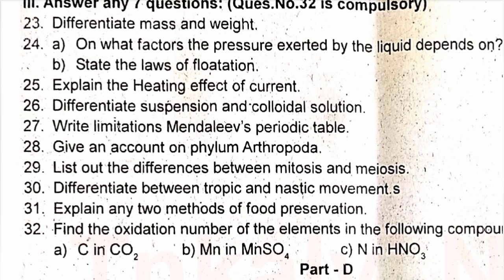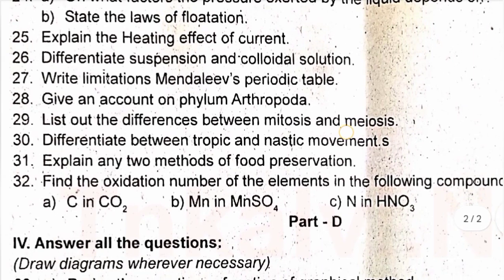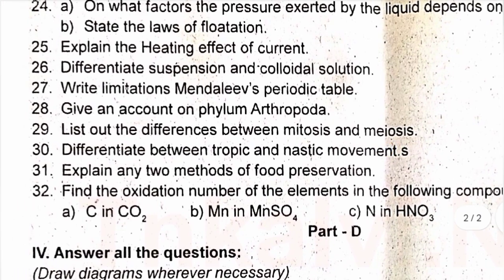Question 28: Give an account on phylum Arthropoda. Question 29: List out the differences between mitosis and meiosis. Question 30: Differentiate between tropic and nastic movements. Question 31: Explain any two methods of food preservation. Question 32: Find the oxidation number of the elements in the following compounds — A) carbon in CO₂, B) manganese in MnSO₄, and C) nitrogen in HNO₃.